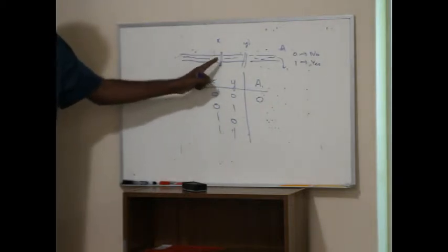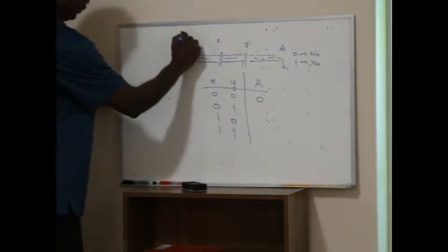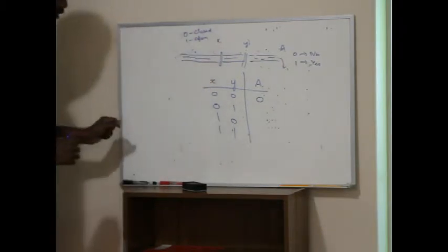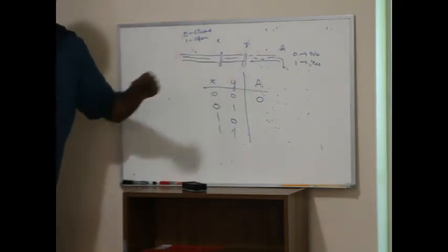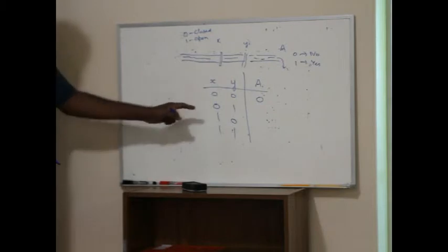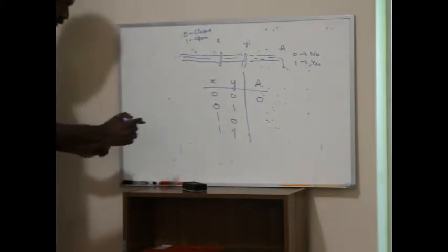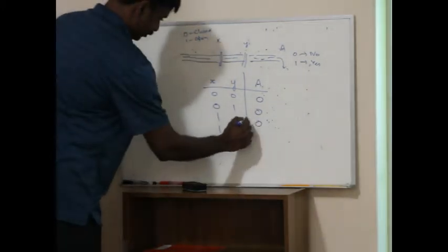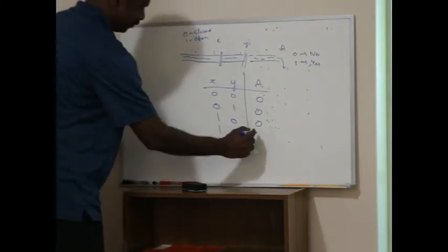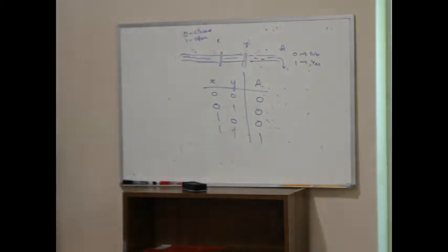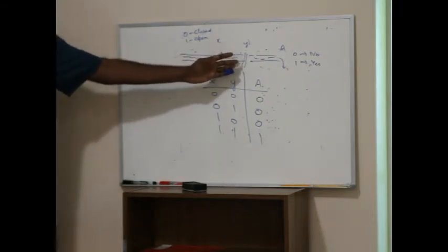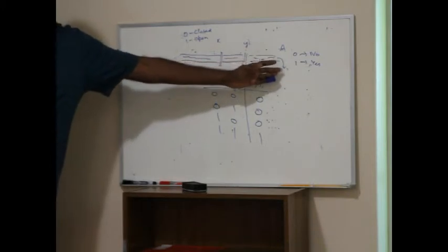In this case, if both are zero, it means both are closed. Let's say 0 is closed, 1 is open. If both are zero — both closed — what will I get at the output? Zero. In this condition: zero. In this condition: zero. How about both being 1? One. So if gate X and gate Y are open, only then A will have water.